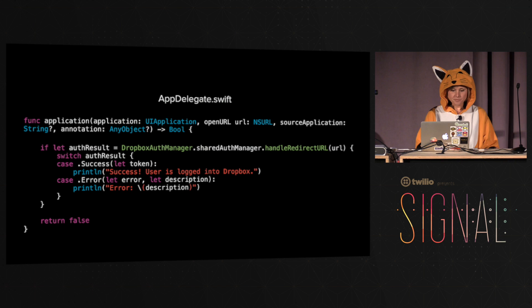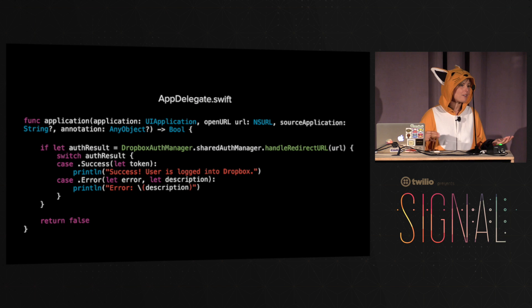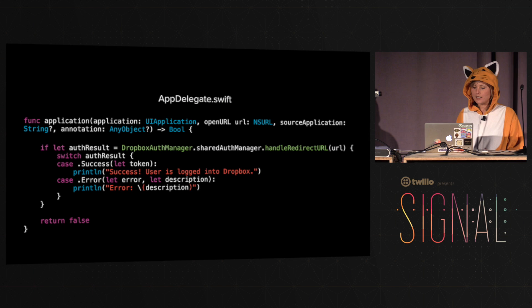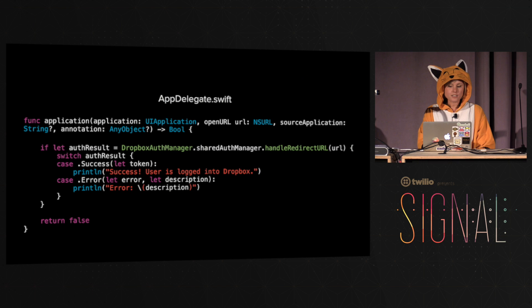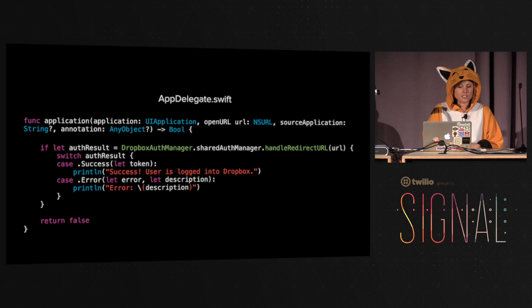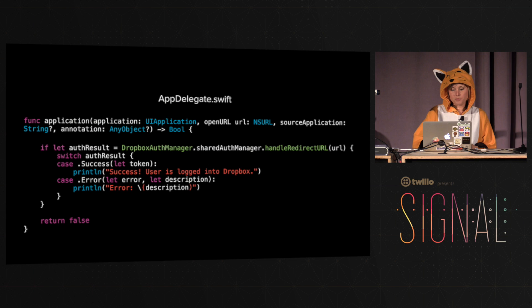So the user is all logged in. Let's look at what it looks like to store that access token. We're going to get back from Dropbox an OAuth 2 access token, and we want to store it so we can keep using it for subsequent API requests. We do this in the openURL method in the app delegate. We check if this URL is that Dropbox redirect URL, and we have a handleRedirectURL method that parses all the parameters and saves them in the Dropbox auth manager.